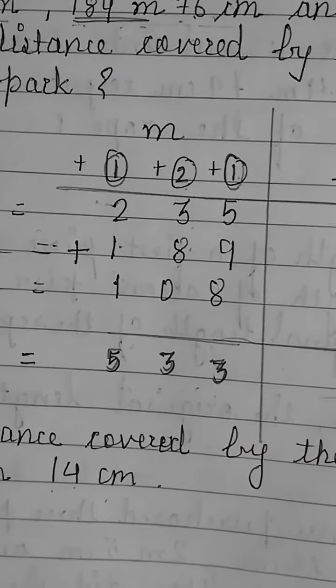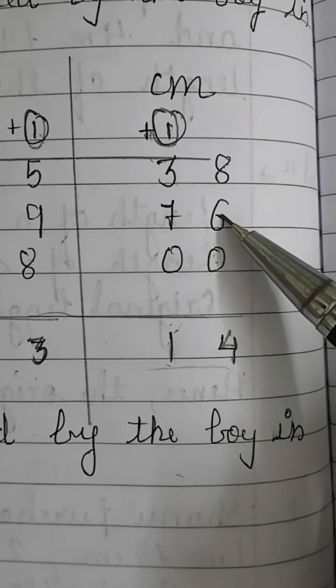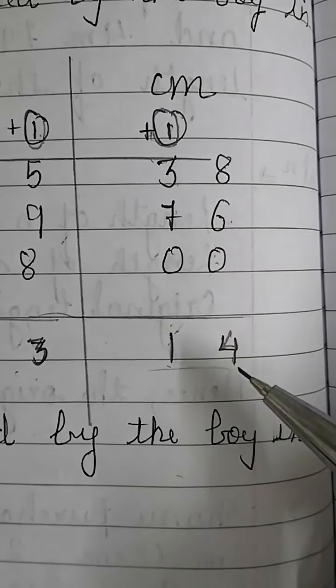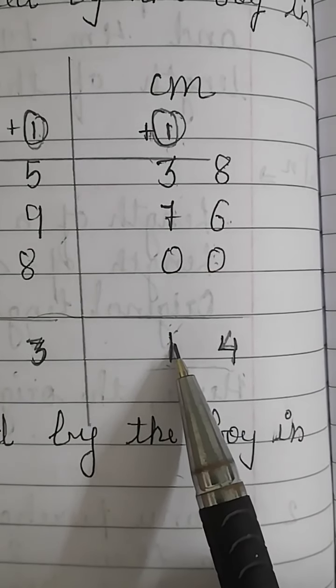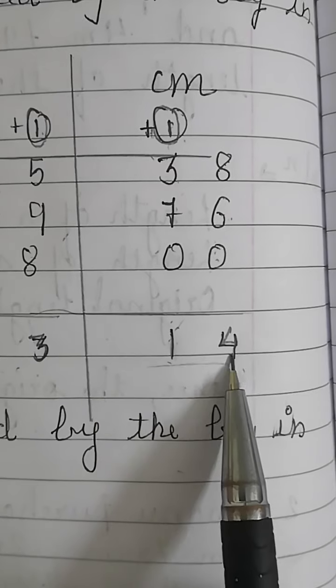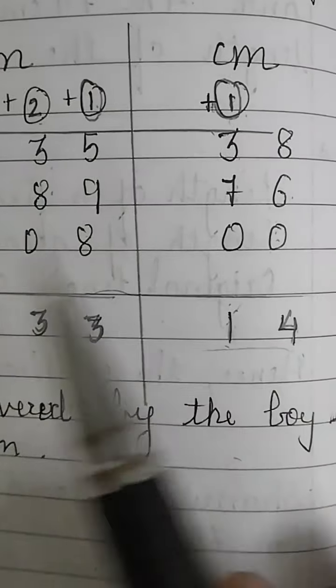We will add the numbers in centimeters first. At the ones place: 0 plus 6 is 6, plus 8 is 14, write 4 carry over 1. At the tens place: 0 plus 7 is 7, plus 3 is 10, plus 1 is 11, write 1 carry over 1 to the meters column. So our centimeters total is 14.